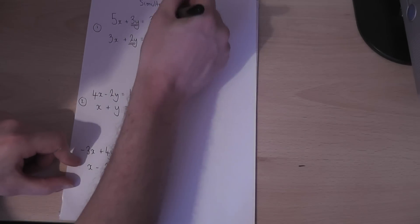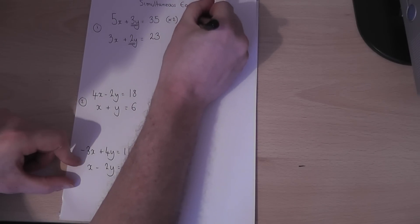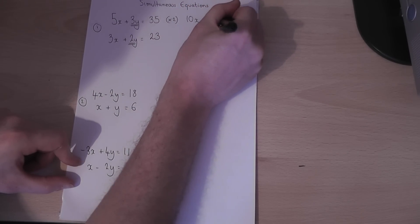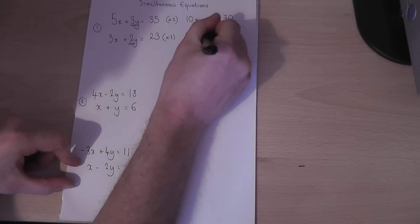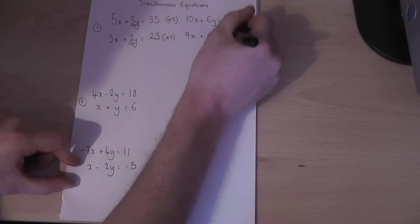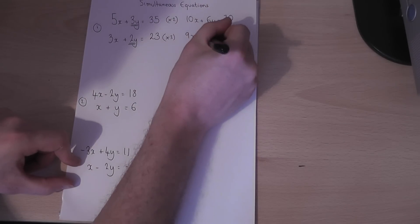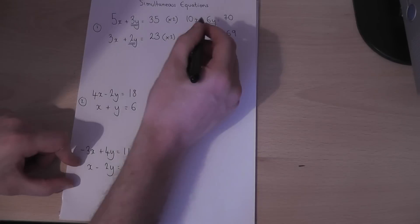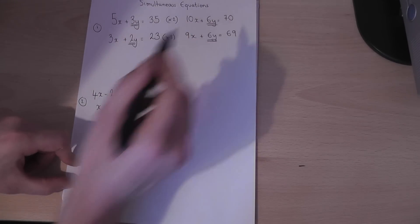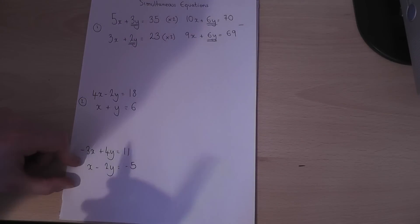The first aim is to make the number of y's match in both equations. If I were to double the first equation I would get 10x plus 6y equals 70. If I then triple the second equation I get 9x plus 6y equals 69. So I now have the same number of y's in both equations. Now I've got a plus 6y and a plus 6y here.